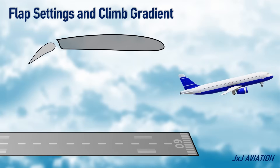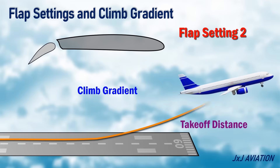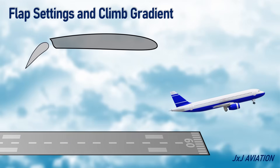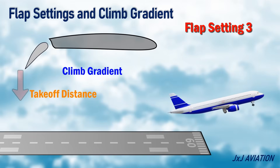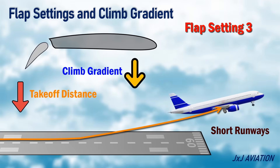Now let's consider the flaps are extended further to flap setting 2. When an aircraft takes off with this setting, the takeoff distance and the climb gradient decrease. If a takeoff is performed with flap setting 3, the takeoff distance decreases further, and the climb gradient also reduces. This setting is used on short runways.